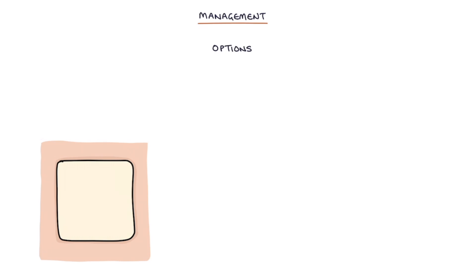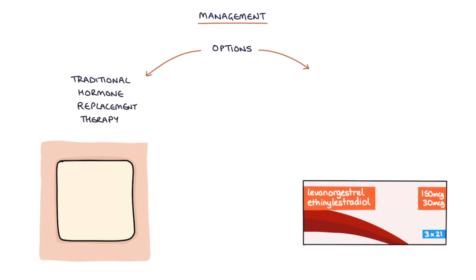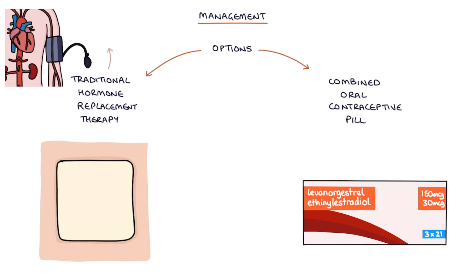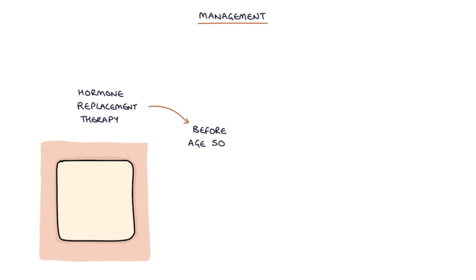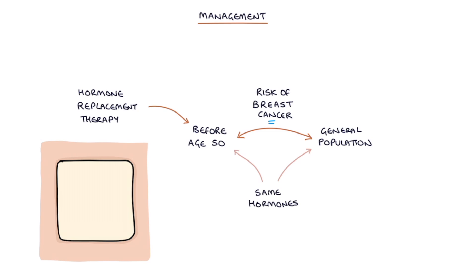There are two options for HRT in women with premature ovarian insufficiency: traditional hormonal replacement therapy or the combined oral contraceptive pill. Traditional HRT is associated with lower blood pressure compared to the combined pill, but the combined pill may be more socially acceptable because there's less stigma for younger women taking the pill compared with HRT, and it also acts as contraception. Hormone replacement therapy before the age of 50 is not considered to increase the risk of breast cancer compared with the general population, as women would ordinarily be producing the same hormones found in the HRT at this age.